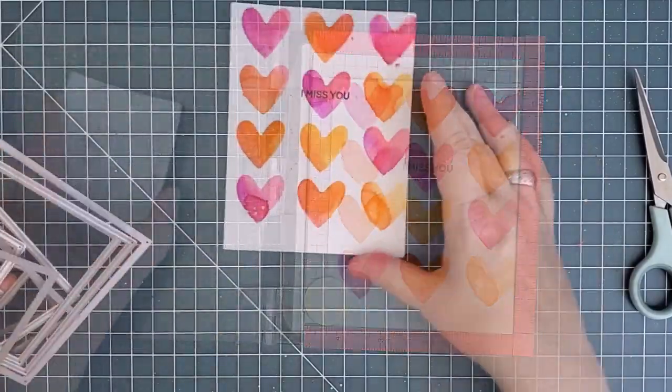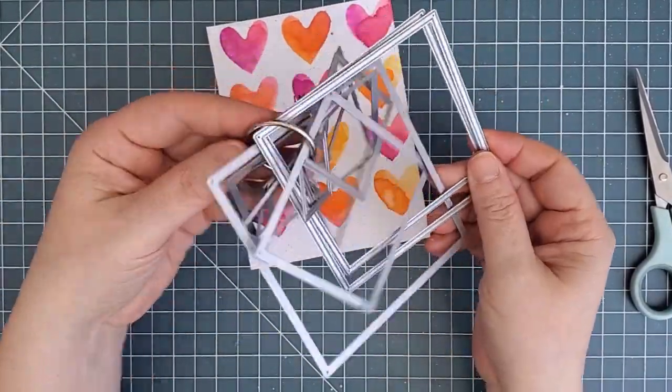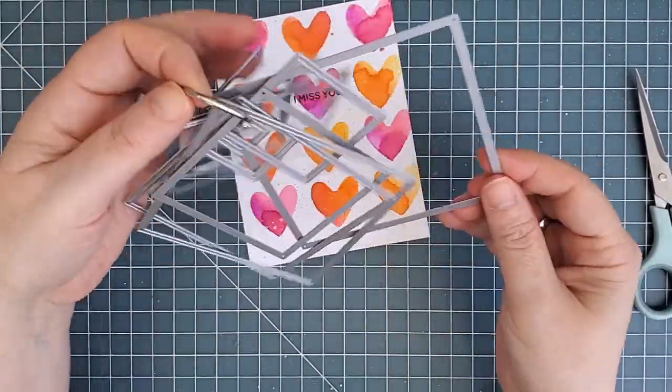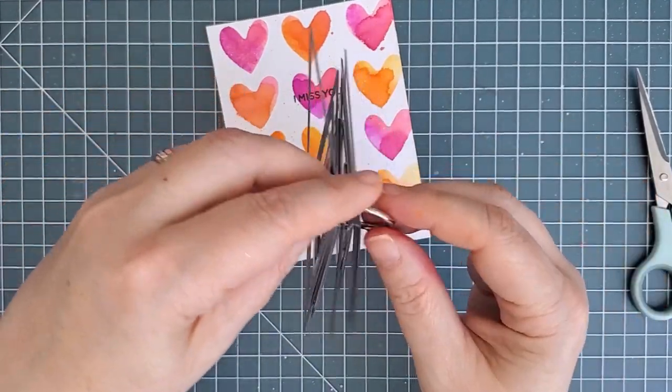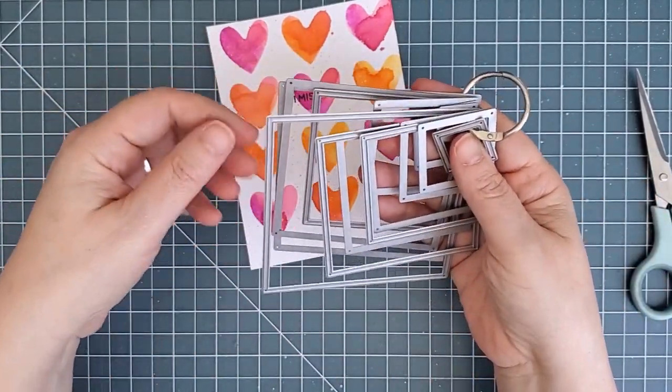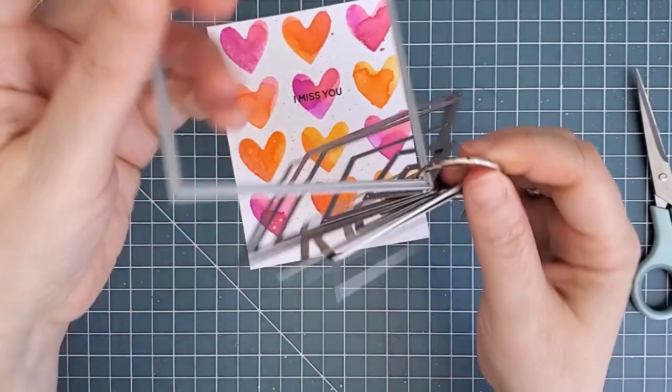Next I chose a large Essential Square die to trim my panel down. I'm keeping these dies on a binder ring rather than in a pocket just because there's so many of them. This is such an easy way to be able to quickly grab all of them and pull out the one I need.